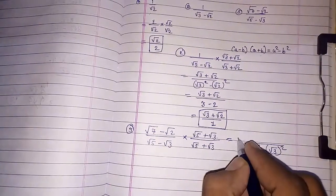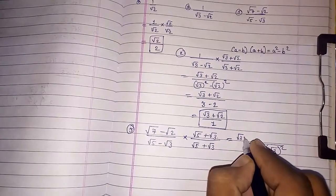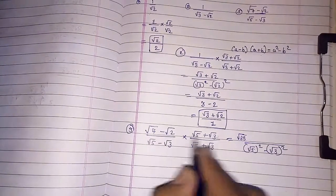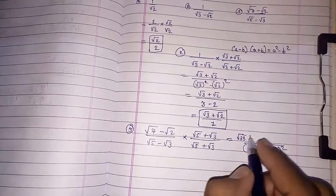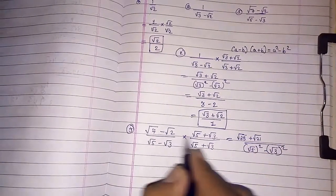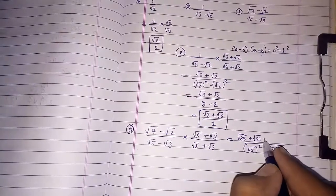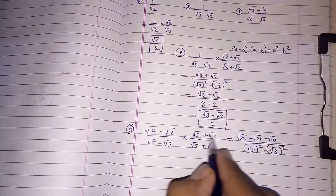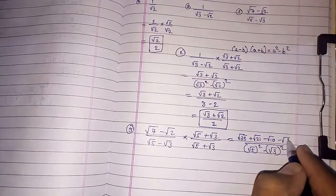Root seven into root five gives you root thirty-five. Root seven into root three plus under root twenty-one. Two into five means minus root ten. And at last, root two into root three, minus root six.